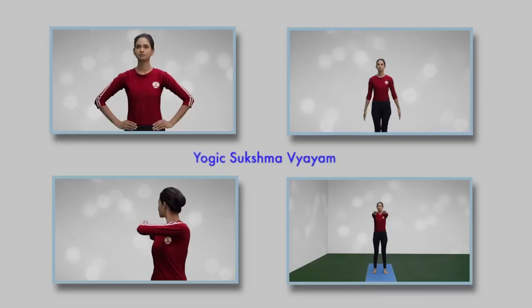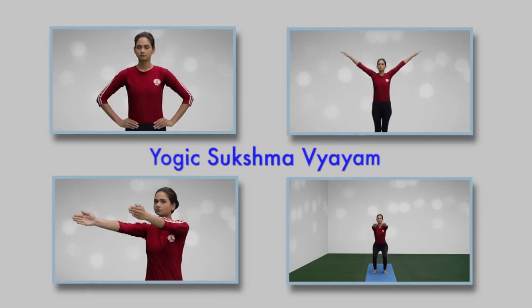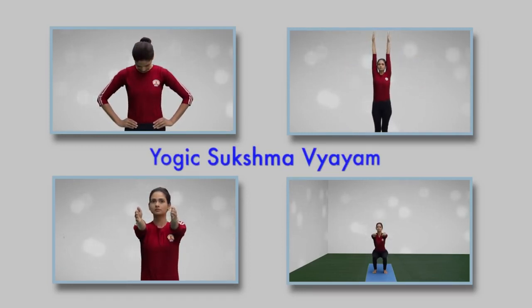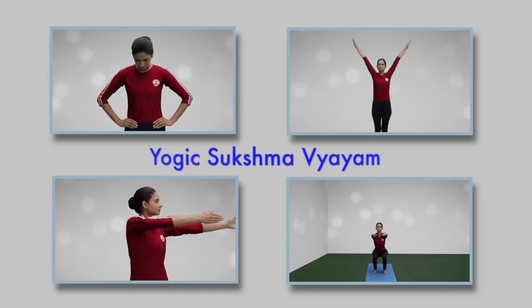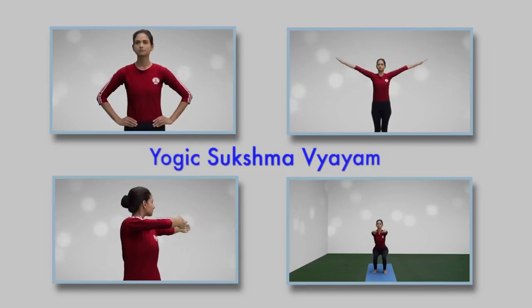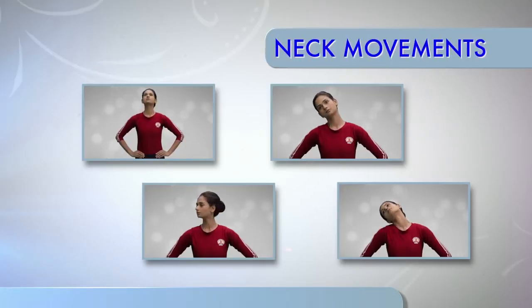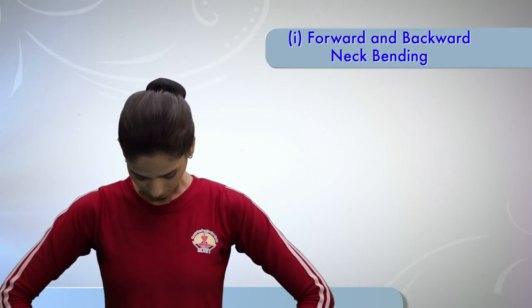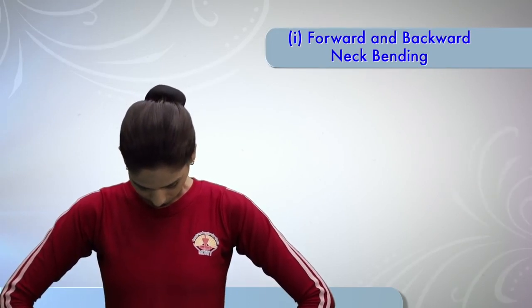Let us start Yog Sadhana with Yogit Sukshmu Vyayama or Loosening Practices to Increase Micro Circulation. Neck Movements: Forward and Backward Neck Bending.